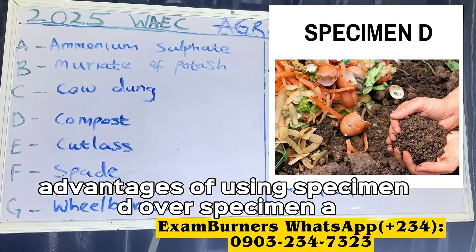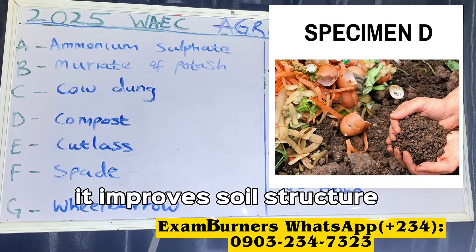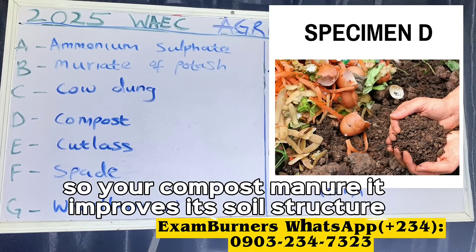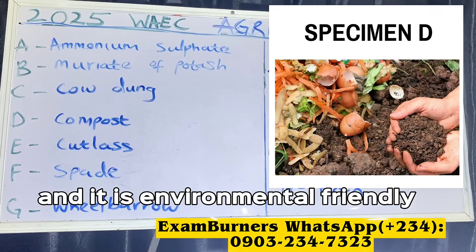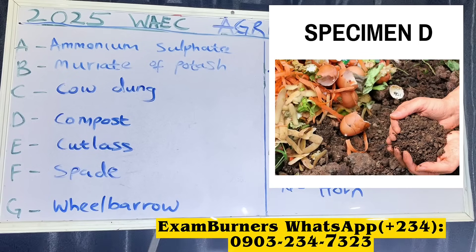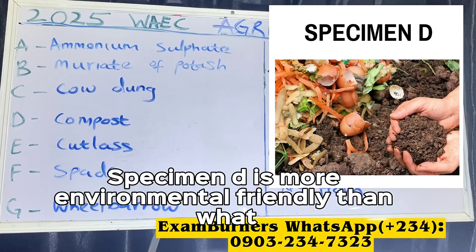State two advantages of using specimen D over specimen A. Specimen D, compost manure, improves soil structure and it is environmentally friendly. Unlike ammonium sulfate, specimen D is more environmentally friendly.